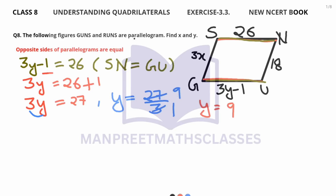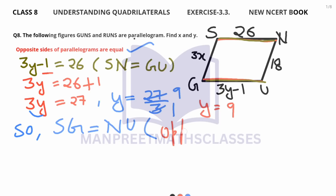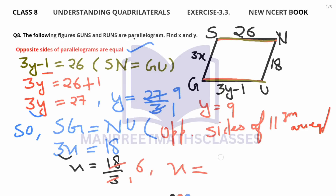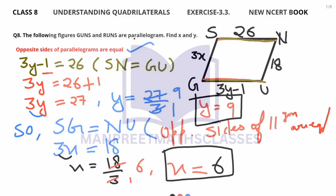Now we calculate the value of X using the same property: SG equals NU (opposite sides of parallelogram are equal). So 3X equals 18. Since 3 is in multiplication with X, we divide: X equals 18 divided by 3, which gives X equals 6. So we got both values: X equals 6 and Y equals 9.